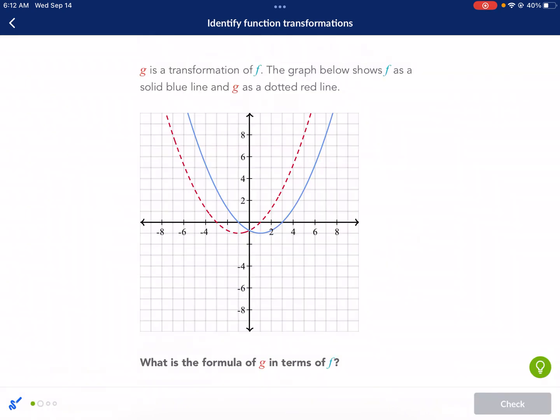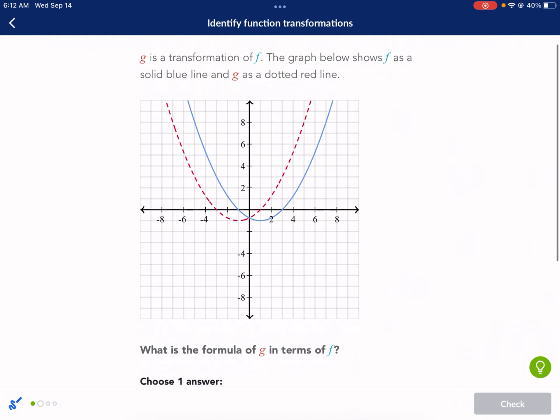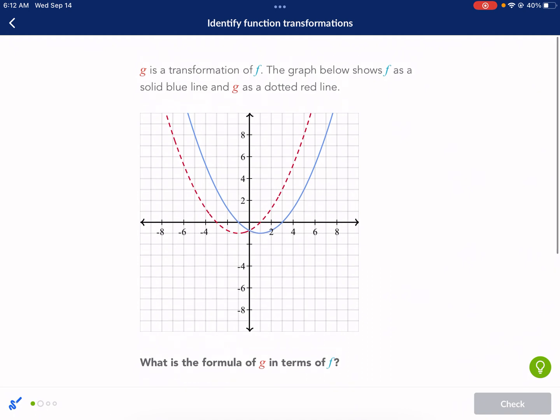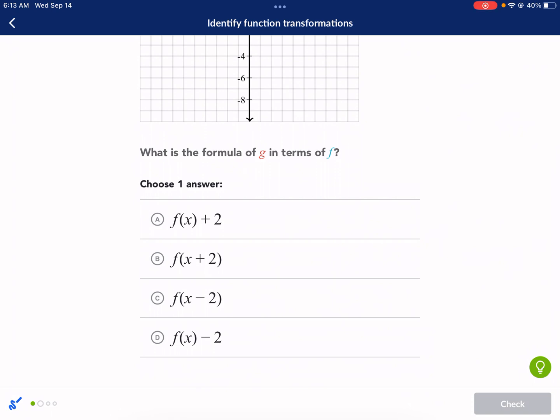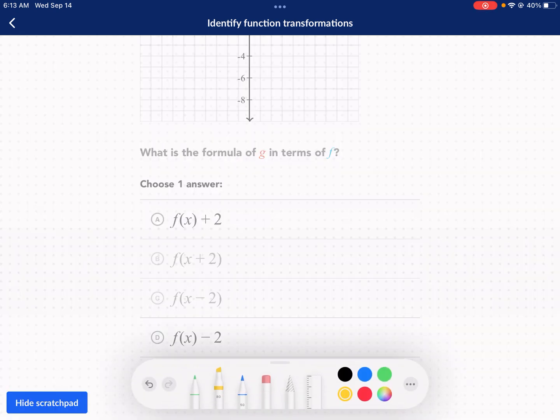Moving on. G is a transformation of F. So the red one's being changed from the blue one. To me, it looks like it's just shifting over to the left and nothing else. So we need to choose which one is being shifted to the left. As we're looking at these, we see that this is being added on the outside and this is being added on the outside. That means these cannot be our options. This is going up two units. This is going down two units. So it's one of these.